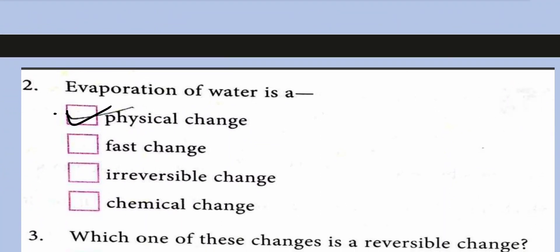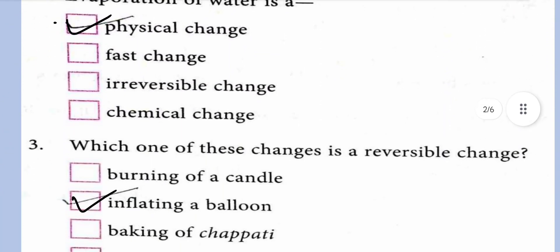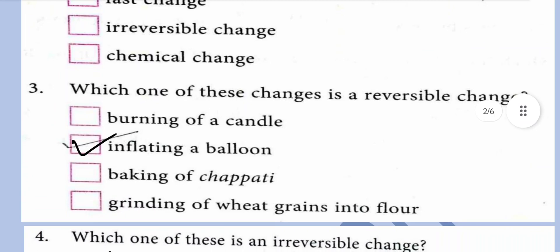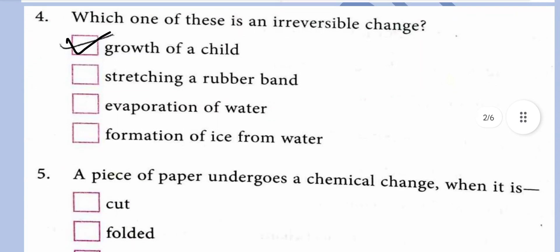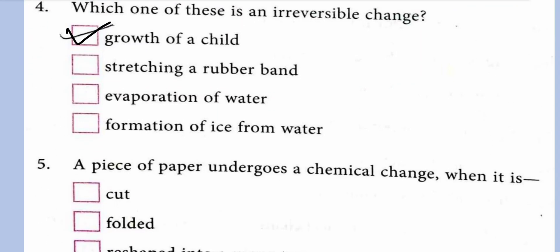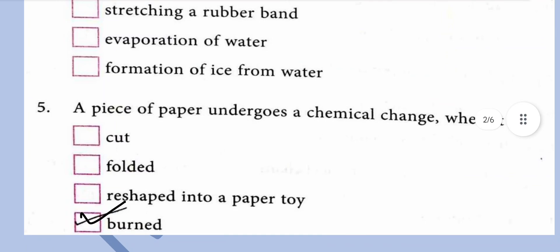Evaporation of water is a physical change. Which one of these changes is a reversible change? Inflating of a balloon is a reversible change. Which one of these is an irreversible change? Growth of a child — that is irreversible, as it cannot be reversed. A piece of paper undergoes a chemical change when it is burnt.